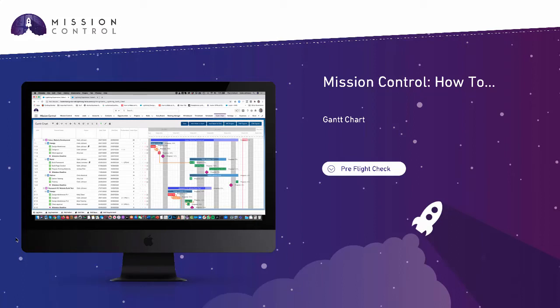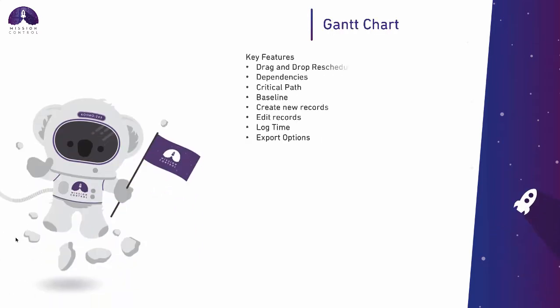Hi there. In this Mission Control how-to video we're going to take a deep dive look into the Gantt chart and all of the features it has. The Gantt chart visualizes the project timeline, giving you full insight into when everything is expected to be delivered. It's fully interactive, so you're able to drag and drop to reschedule, create dependencies, view your critical path, compare baselines to actual dates, as well as building out new records.